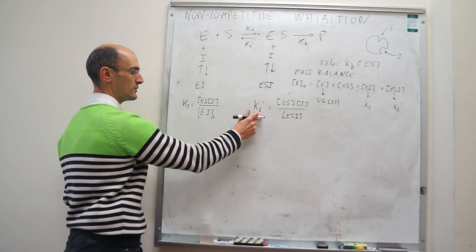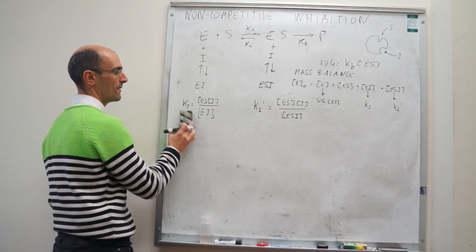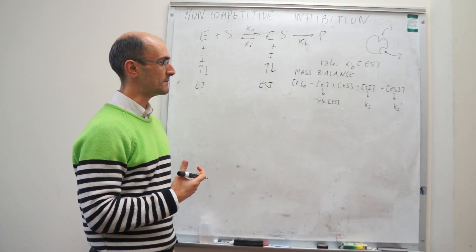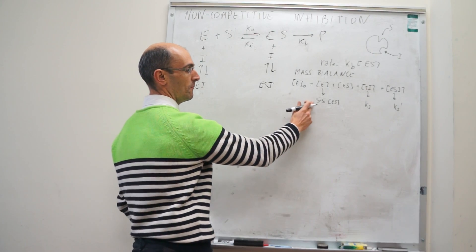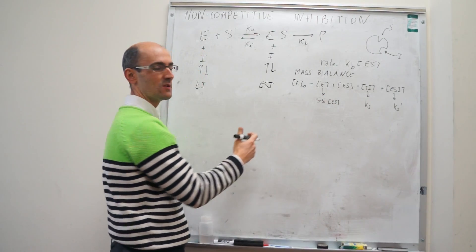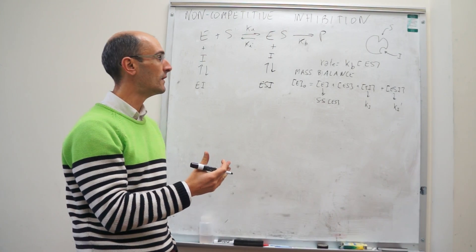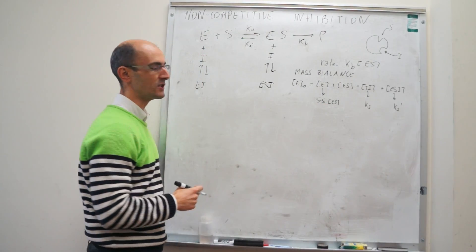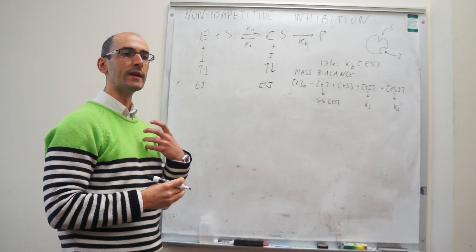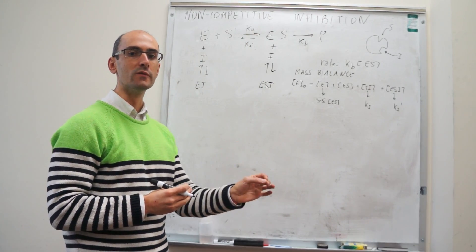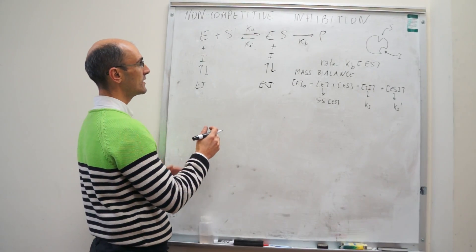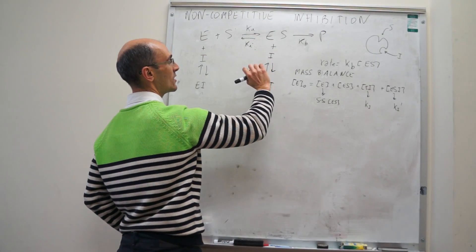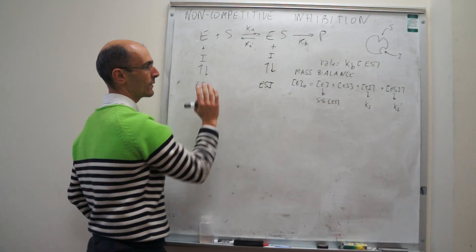I'm going to be skipping some steps here. For the steady-state approximation, when you set up the steady-state equation for ES, you figure out what reactions are generating ES and which are removing ES. For competitive inhibition, there's one reaction generating ES and two reactions removing it.